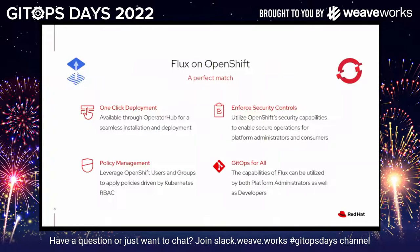I want to talk about how Flux and OpenShift is really that perfect match. Getting started with Flux and OpenShift is as simple as possible — it's a one-click deployment. There's an operator available in the OperatorHub that provides seamless integration and deployment of the Flux platform. You have the ability to leverage policy management to ensure that only certain users can access Flux and deploy resources. You can use GitOps and Flux's tools to enforce security controls, and it's all based on GitOps — a holistic solution for platform teams, application administrators, and developers.